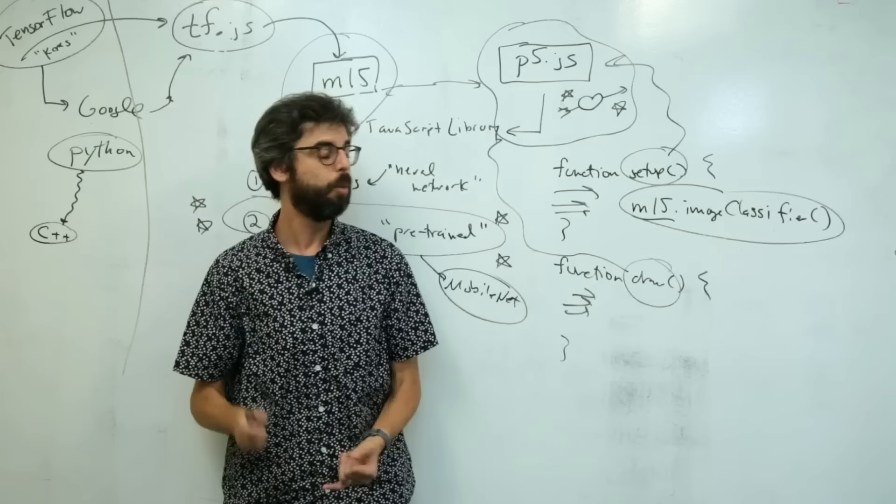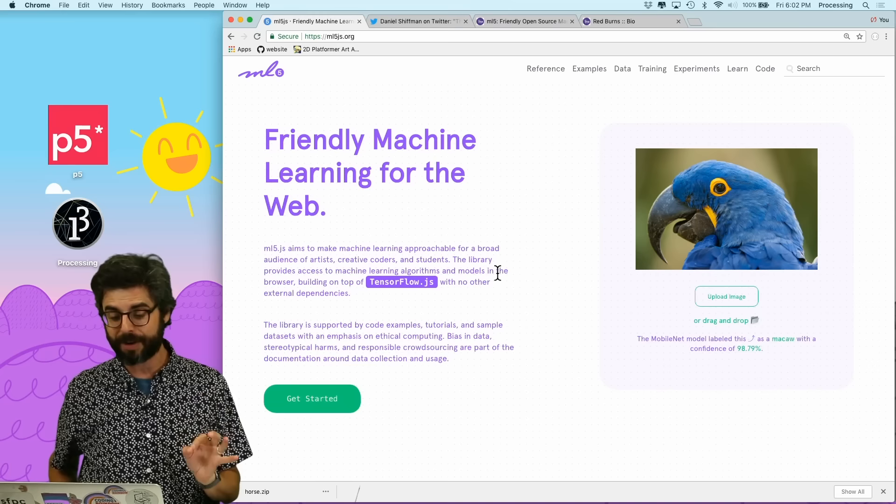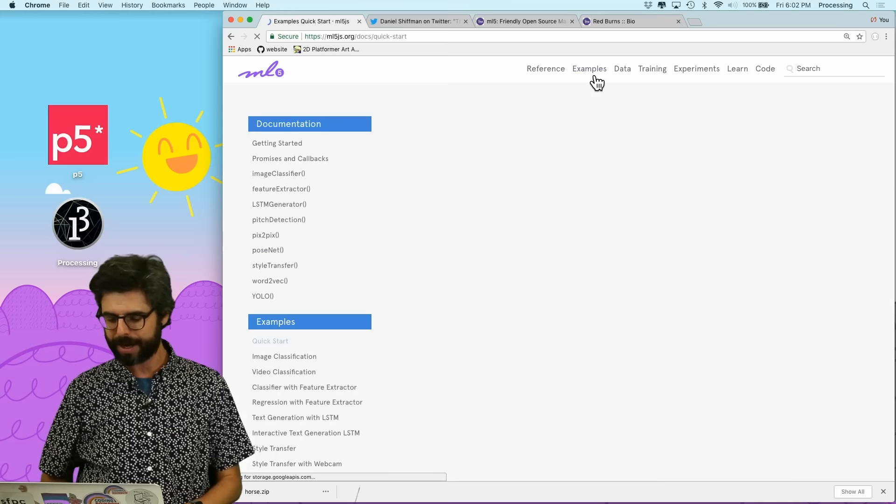Corporations train models to perform a particular task, to recognize your face, to turn the words you're speaking into text. There are many questionably ethical applications of this. There are also fun, artistic, and playful applications of this. So one of the ways I think to get started as a beginner to machine learning is actually not to learn all the math and learn how to train all your own machine learning systems, but to actually make use of some pre-trained models that are out there. For example, the thing that I'll start with in the next video is a model called MobileNet.